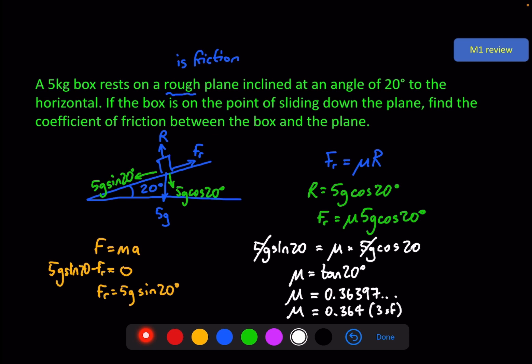You could have skipped all of that work if you remember that in this particular situation — a box on the point of sliding down a plane with no other forces acting — mu is always equal to tan of the angle of the incline.